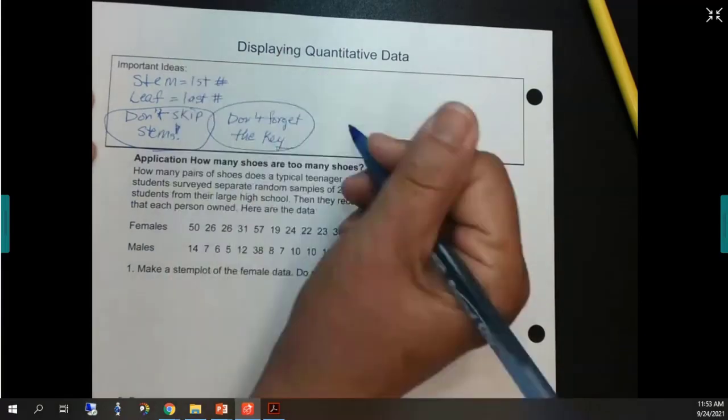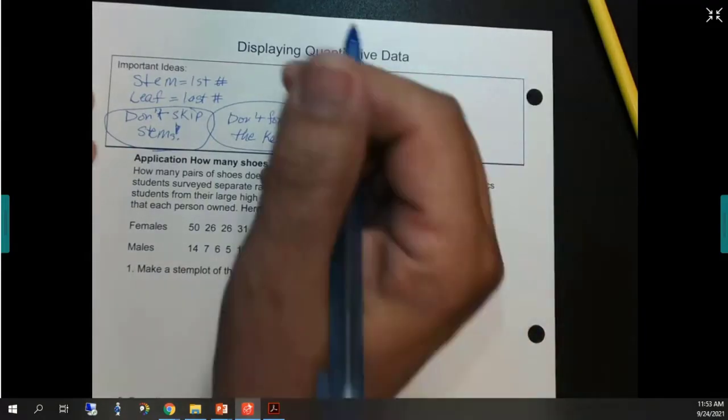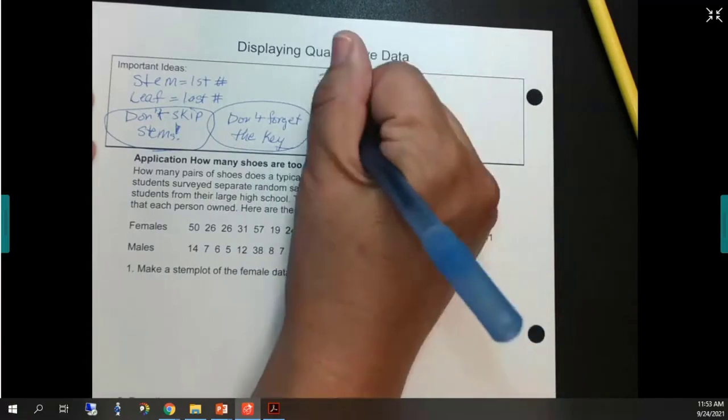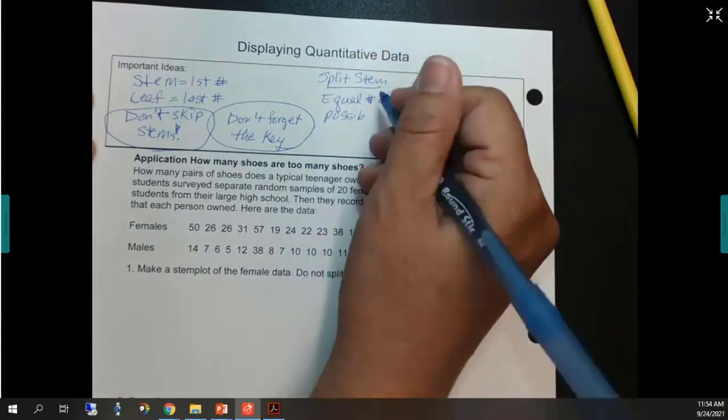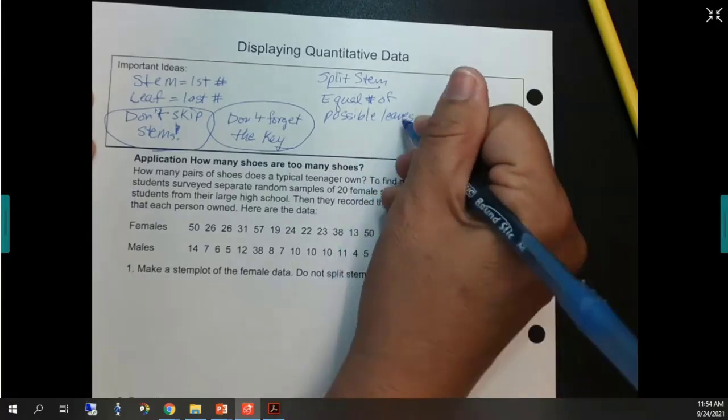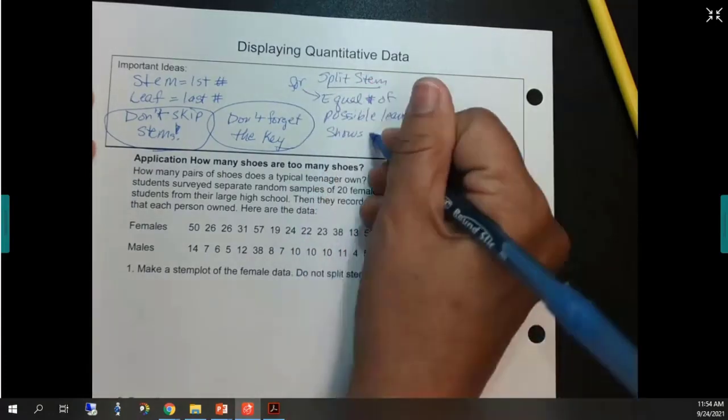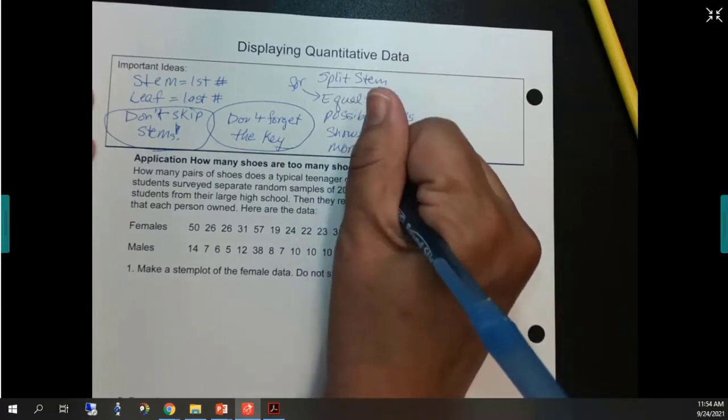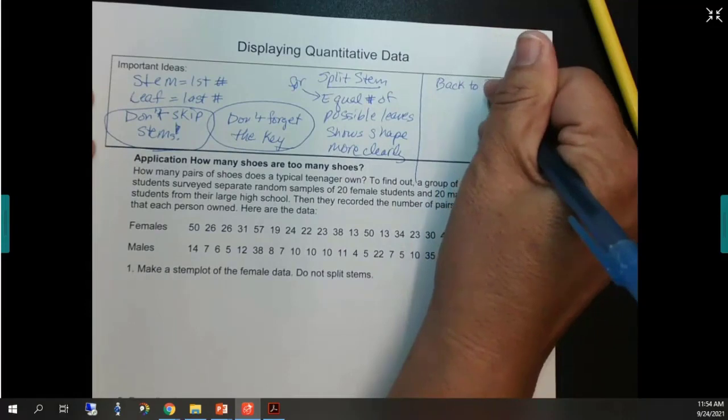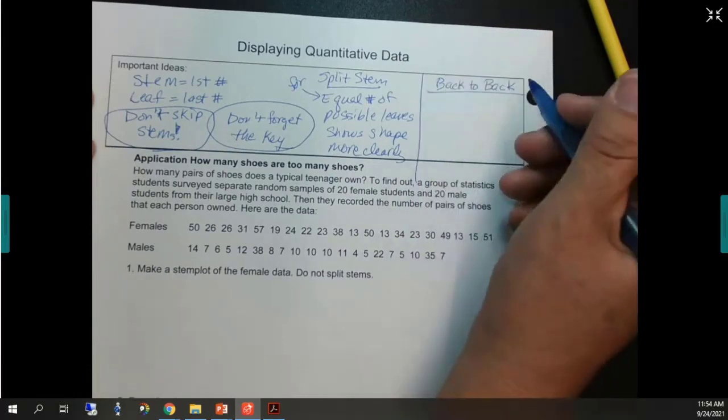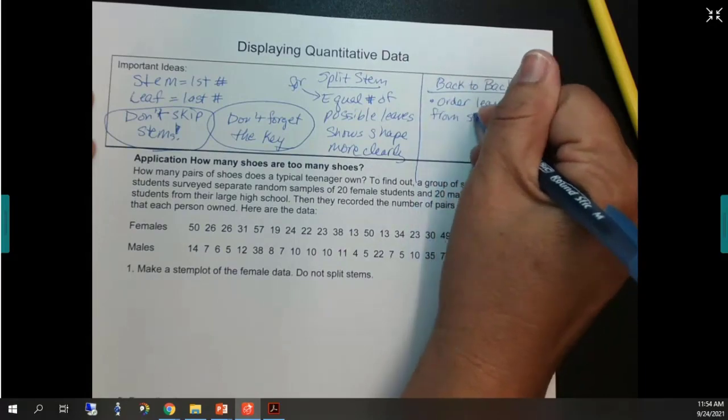Don't forget the key. So, if I had you do it on paper, I would be checking that. If we split the stem. Yes, you're good to go. Equal number of possible leaves digits. And that's when you'd want to do it. When you have a lot, really, it shows shape more clearly if you don't have a lot, big range. And then on back-to-back, order leaves from stem out.